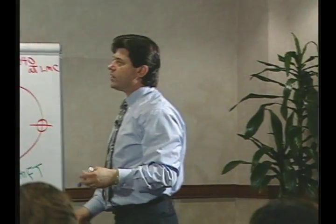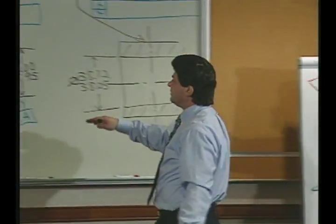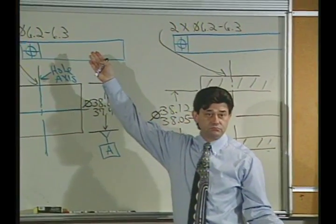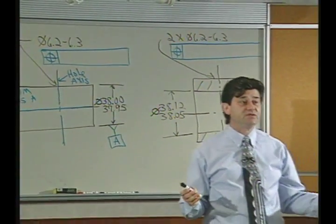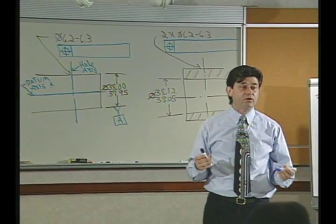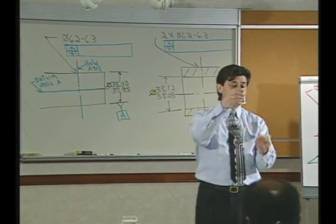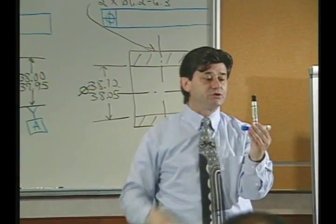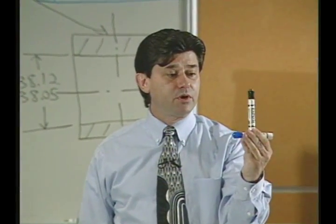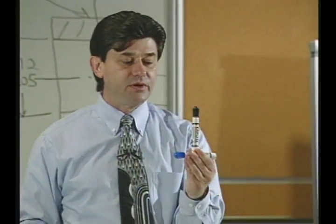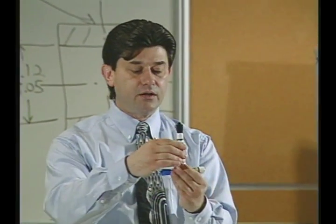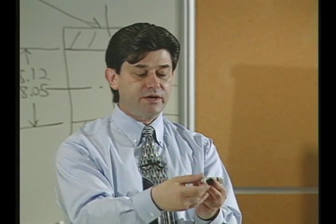Alright, so somewhere inside of this feature control frame there would be an A. The relationships that would be held, the degrees of freedom that would be stopped by A between that hole and A, this is the hole's axis, this is the axis of A, their relationship would certainly be perpendicular and intersection. Would that relationship of perpendicularity and intersection be held even if the axis of the hole ended up over here? Yeah it would.